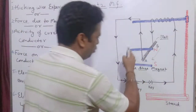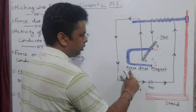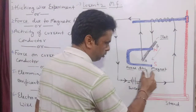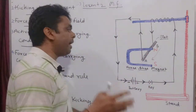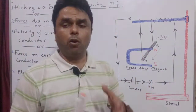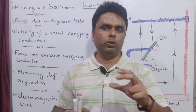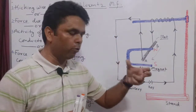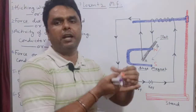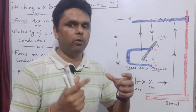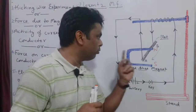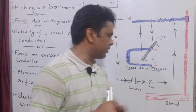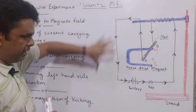Now let's look at the blue U-shaped object — this is called the horseshoe magnet. It is shaped like a horse's shoe. The shape at the bottom of a horse's hoof, where we fit a metal shoe, is this U-shape — which we call a horseshoe or 'ghode ki naal.' This is our arrangement.